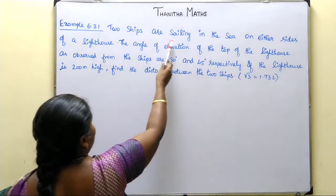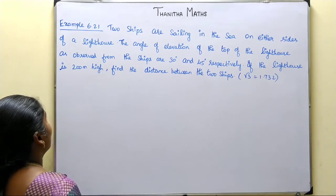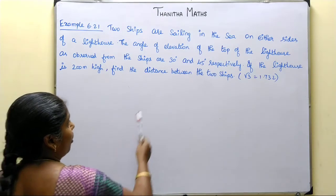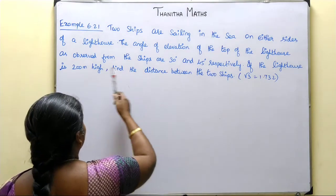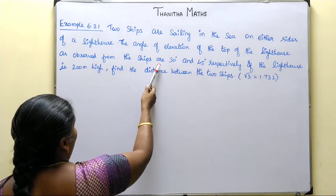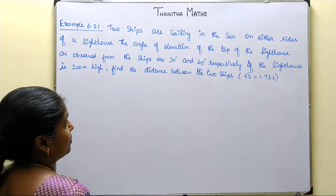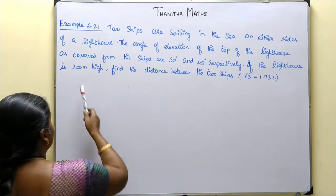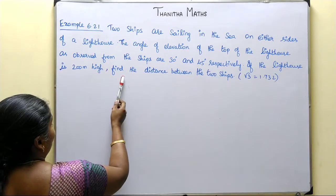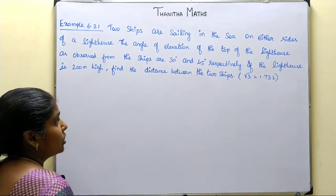Two ships are sailing in the sea on either side of a lighthouse. The angle of elevation to the top of the lighthouse as observed from the ships are 30 degrees and 45 degrees respectively. If the lighthouse is 200m high, find the distance between the two ships.